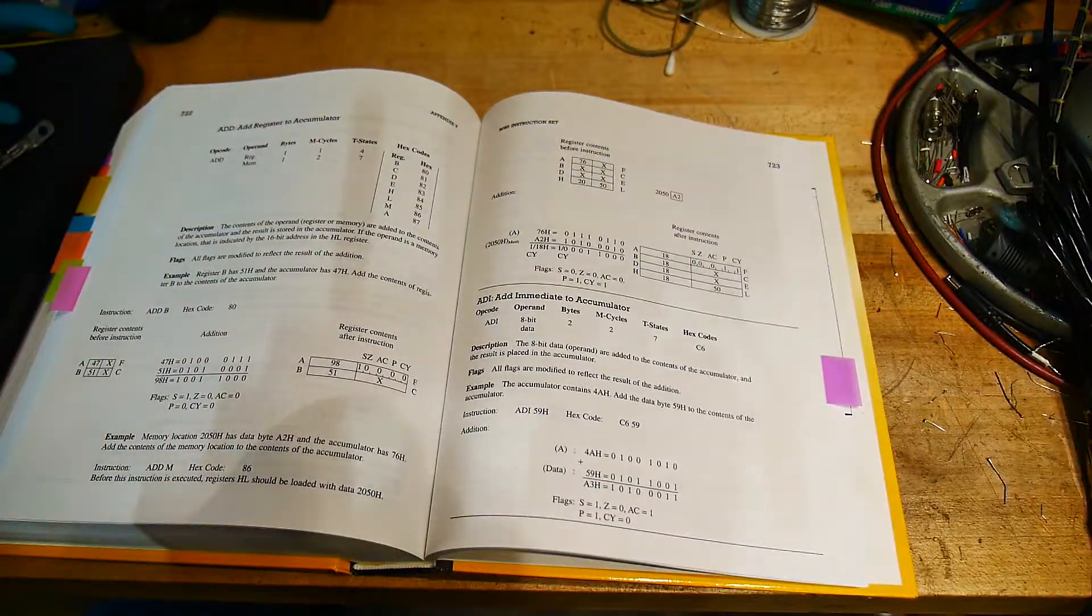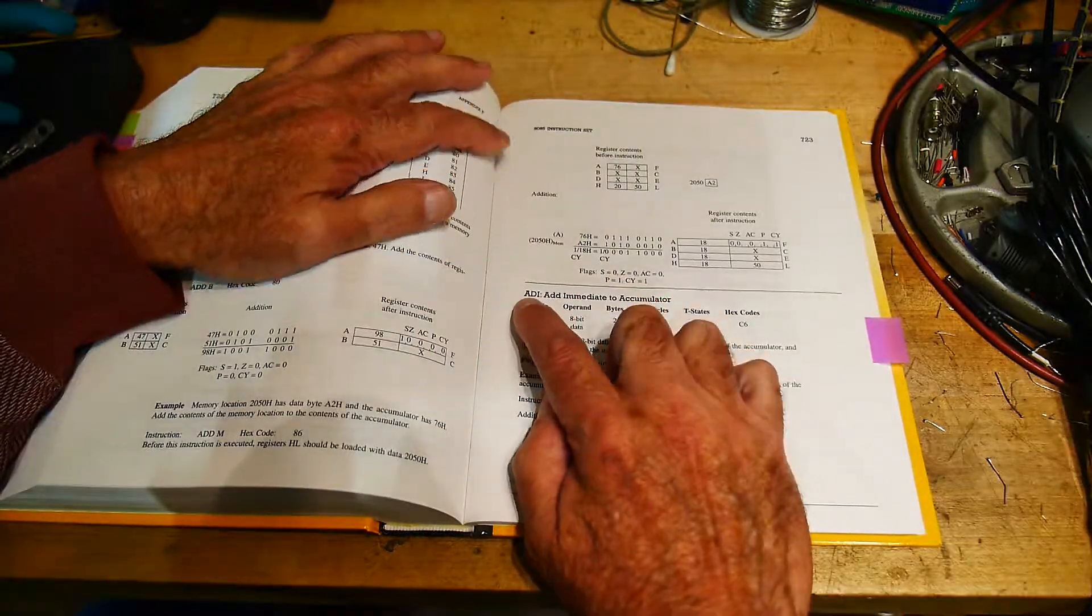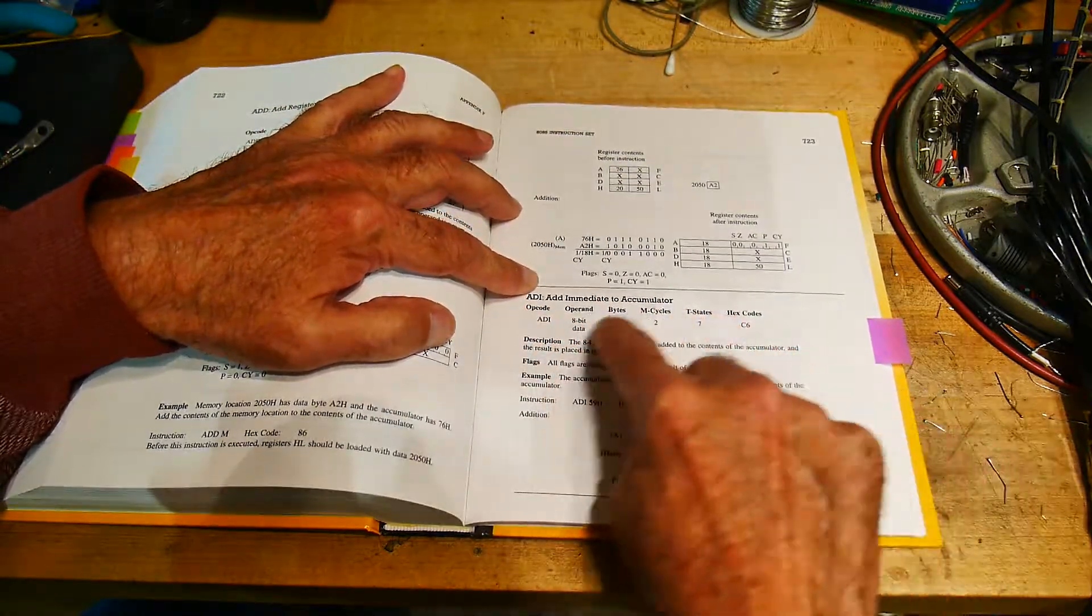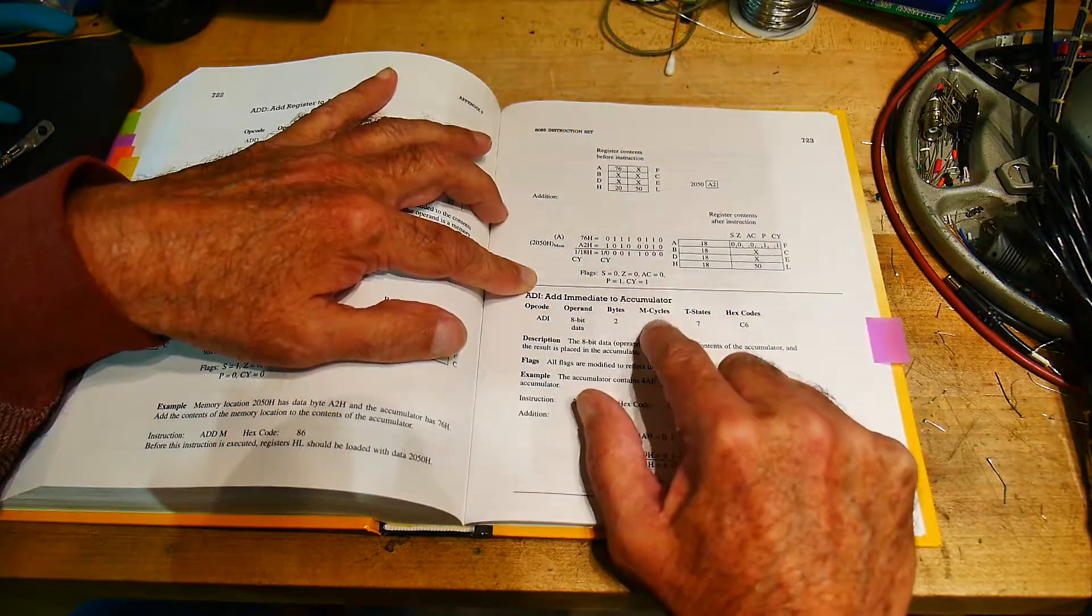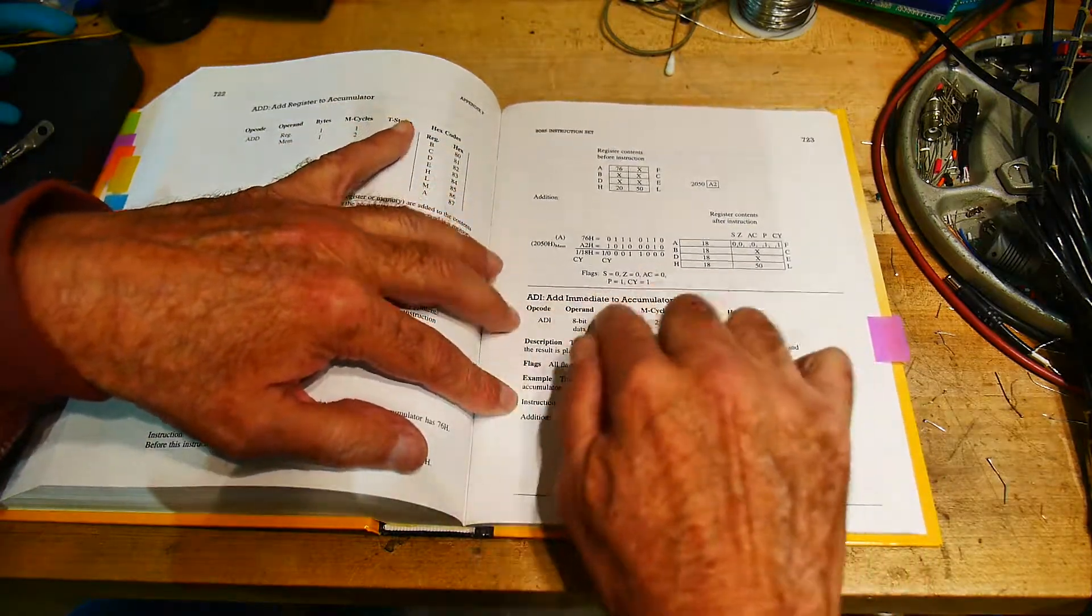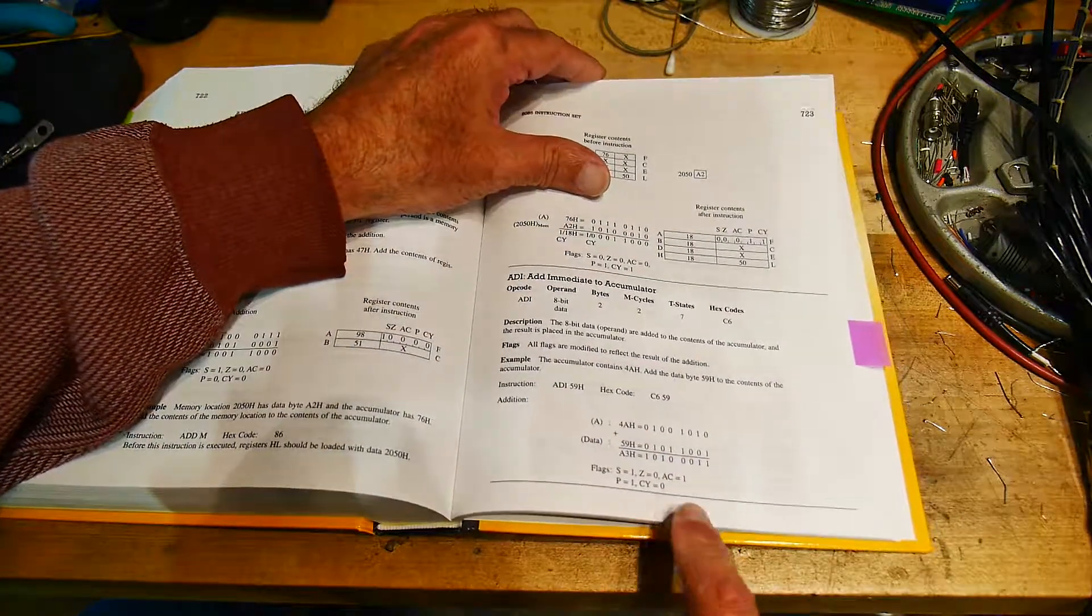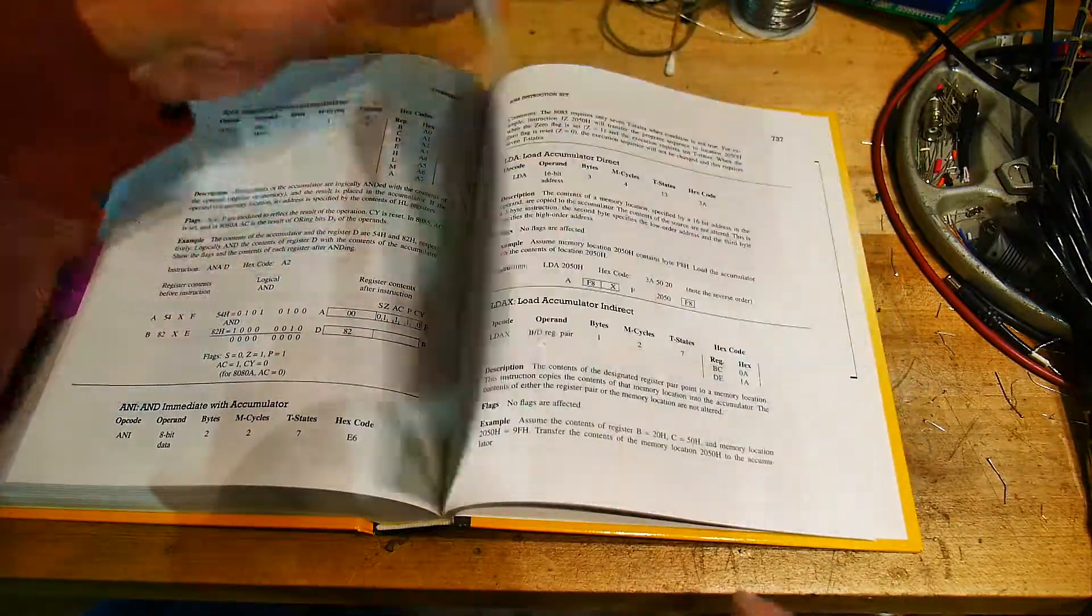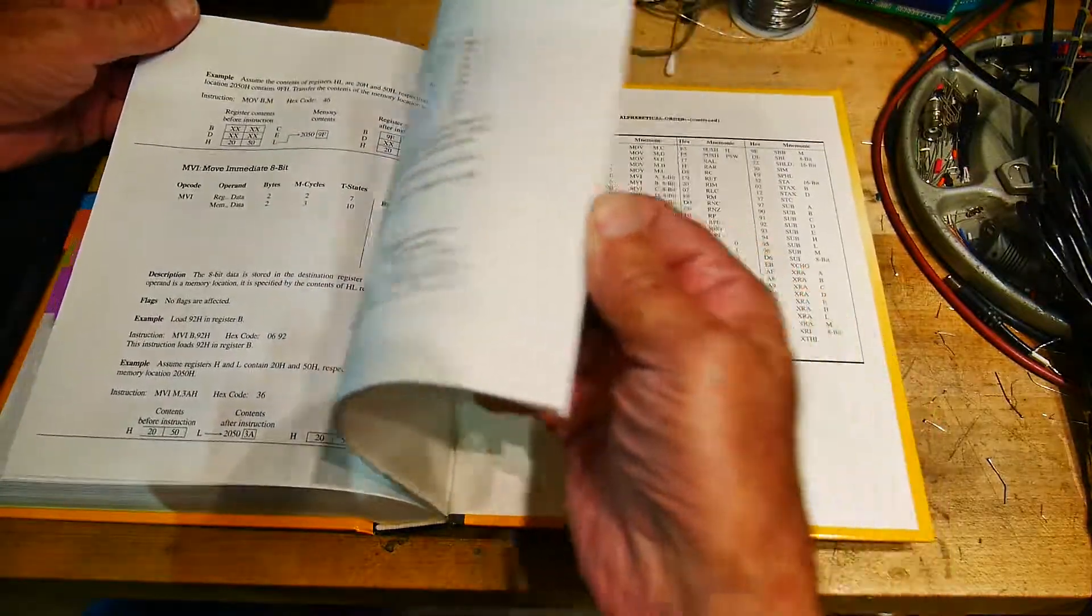In the back is a good section on each 8080/8085 instruction, how it operates, how many actual cycles of processor time it takes, M cycles, T states, what the hex code is, how many bytes the operation takes up, how it works, which flags were affected during the operation of the instruction. It's a very nice section for all of the instructions of the 8085, which is exactly the 8080 plus a couple more.